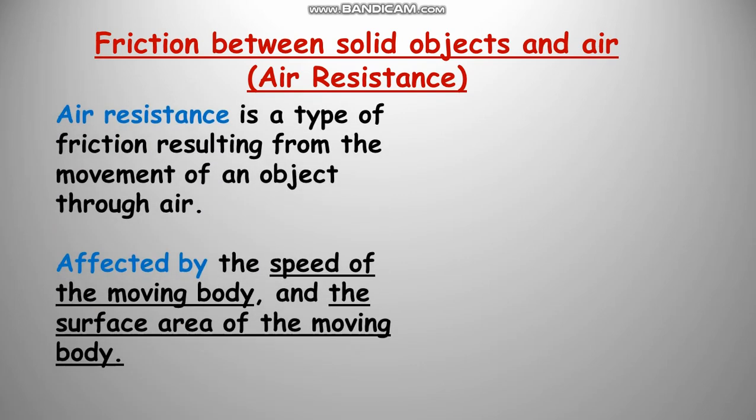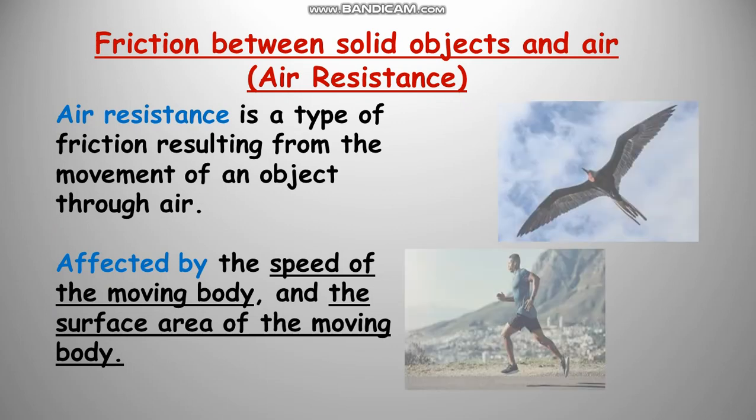Let's start with the friction force between solid objects and air, which is called air resistance. Air resistance is a type of friction force resulting from the movement of an object through air. There are two factors that affect air resistance: the first one is the speed of the moving object,